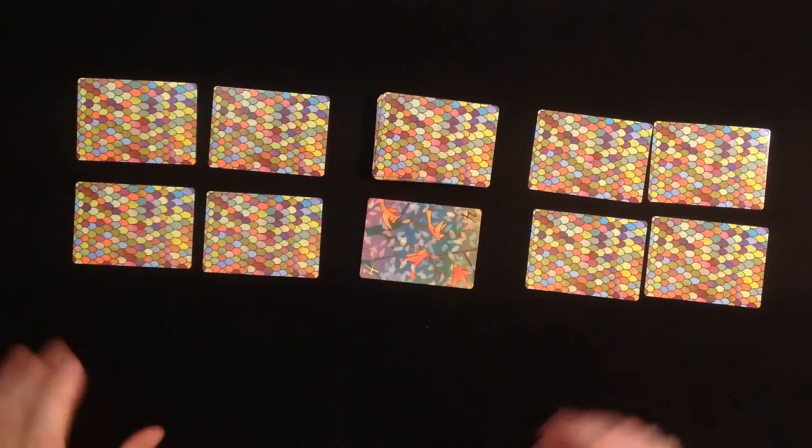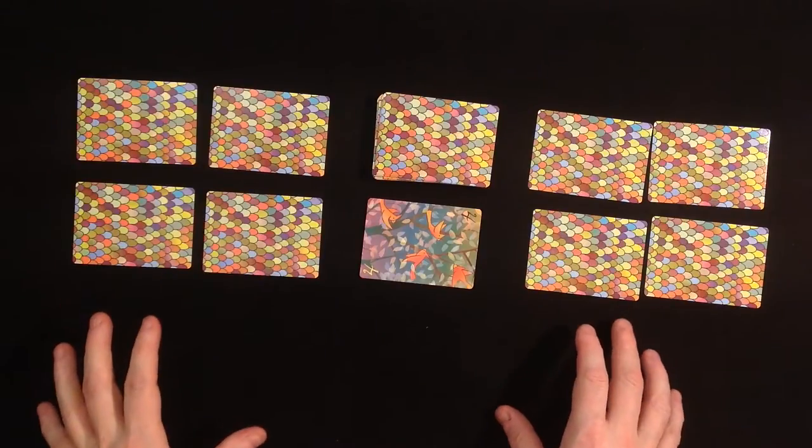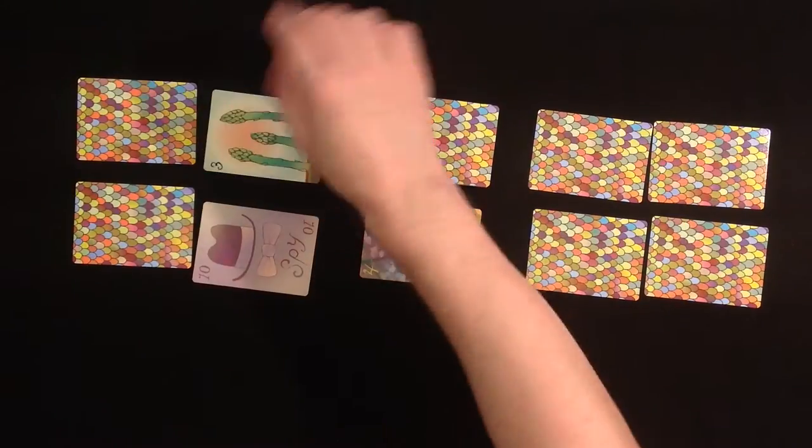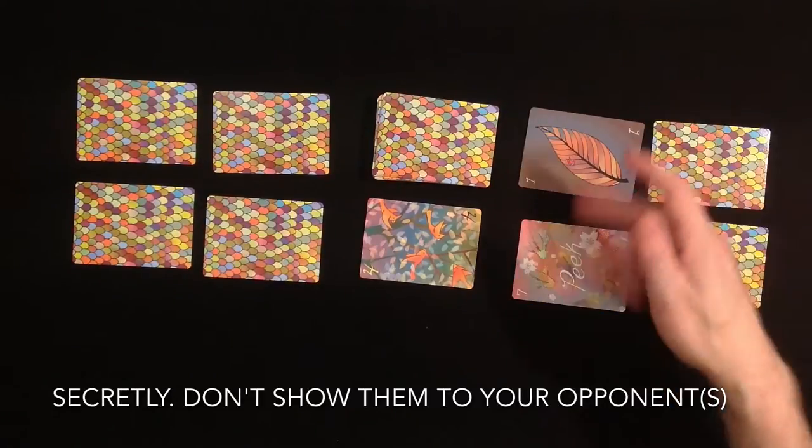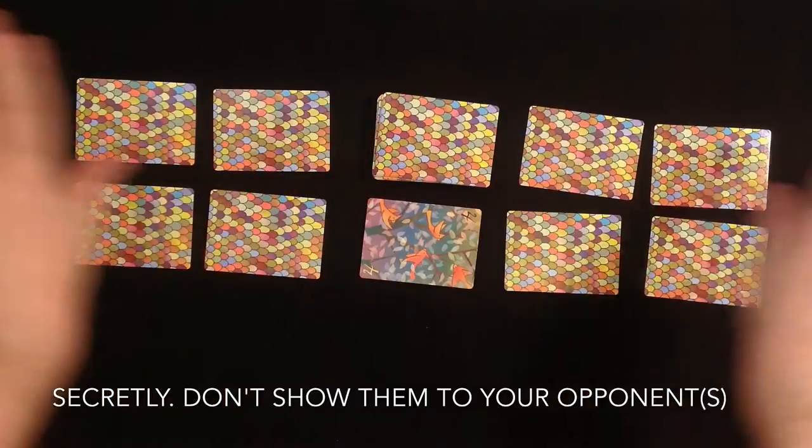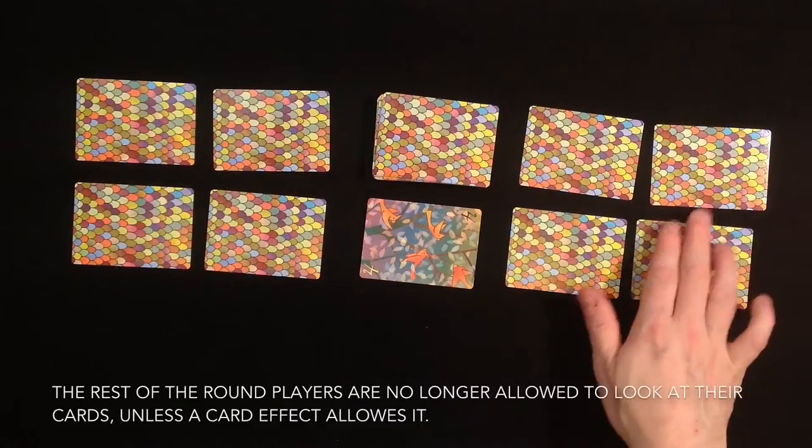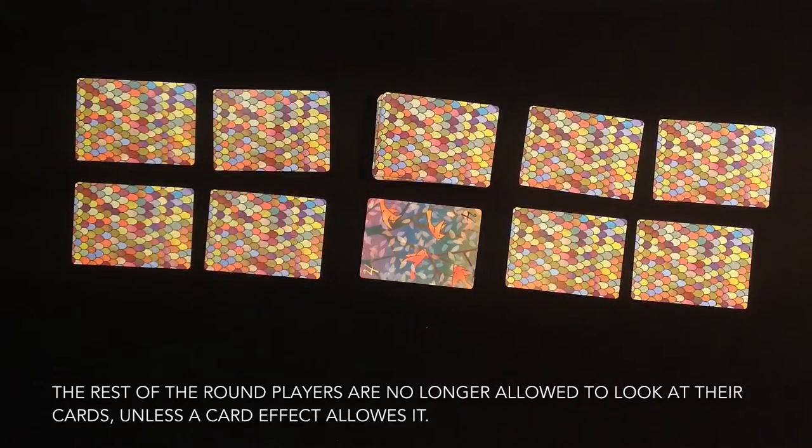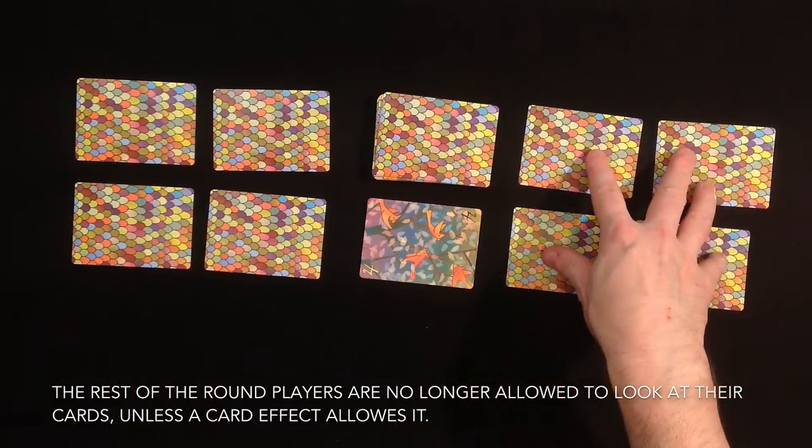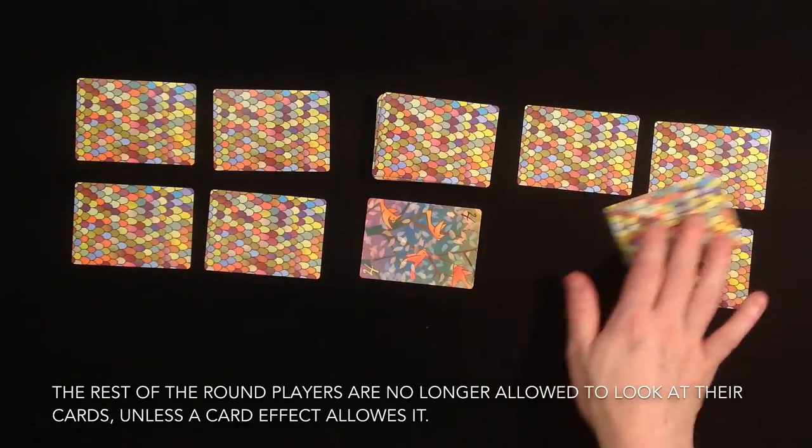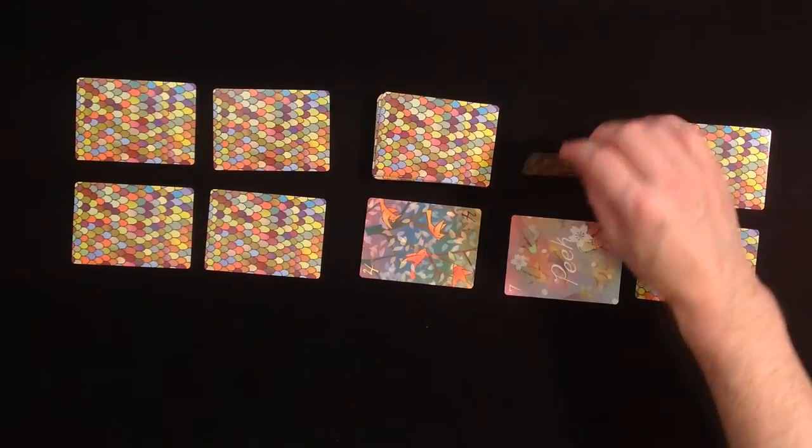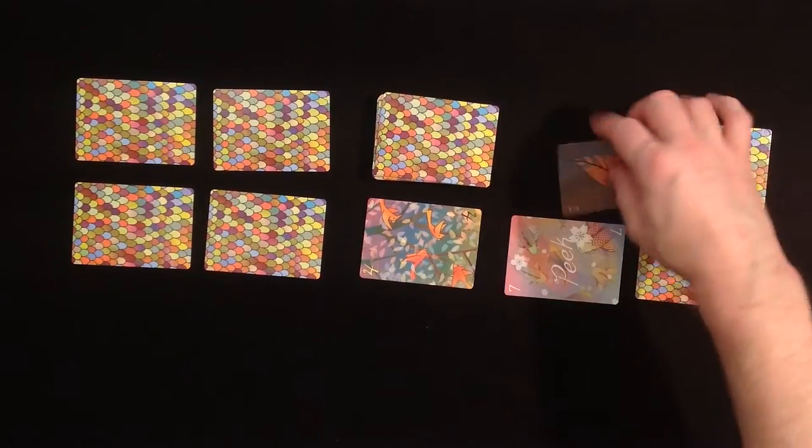At the end, each player, before the game starts, can look at two of his cards, only two. So let's say here's a ten and a three, and a seven and a one. And of course, the players need to memorize them.